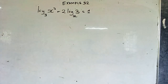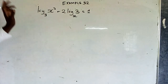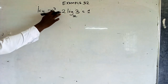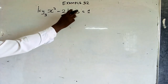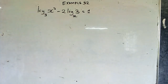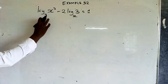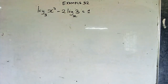Solve the evaluative question: log x cubed to base 3, minus 2 log 3 to base x, is equal to 1. We cannot use the normal logarithm laws because we have different bases.